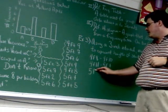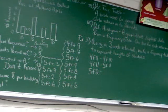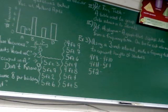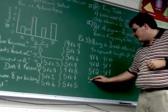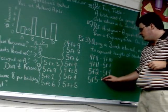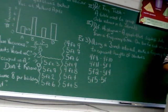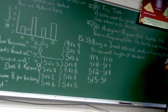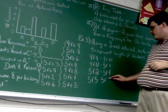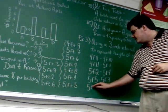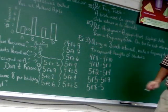If I start the next interval at five foot two, where would it end? Five foot four. Good. And the next one would go five foot five to five foot seven. And the last one is five foot eight to five foot ten.